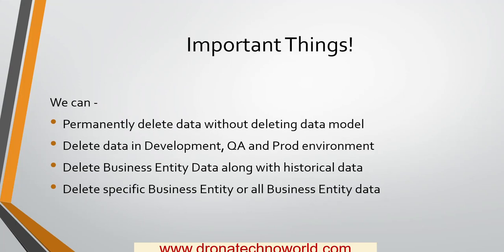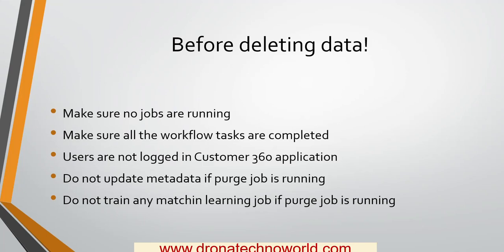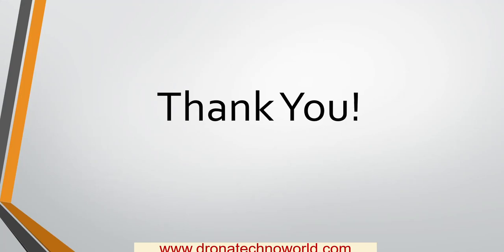You can delete data specific to any given business entity, or delete all business entity data as a single request. Before triggering the purge or delete job, make sure there are no jobs currently running — ensure all jobs are in a completed or error state. Make sure all workflows currently executing are finished, and check with your business users that no one is accessing the Customer 360 application. Also, do not make any metadata changes like adding columns or changing column lengths, do not make configuration changes, and do not run any machine learning jobs, as these will impact the purging process.